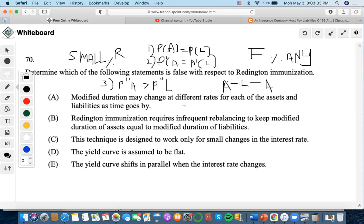Now, let's go over all of these to see which of these statements is false. Okay, so Redington, we already went over. Yes, Redington is designed to work only for small changes in the interest rate, so that's correct. Redington requires infrequent rebalancing to keep modified duration of assets equal to modified duration of liabilities. Let's look at that later.